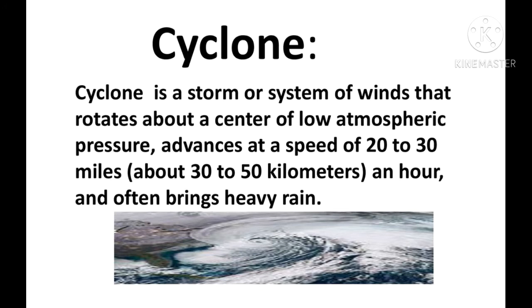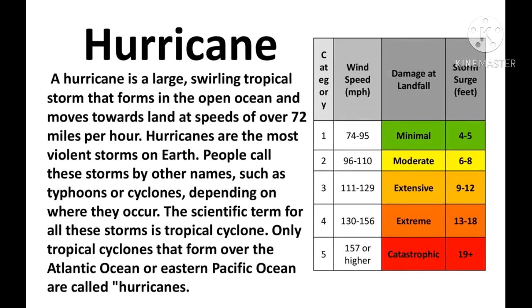A cyclone is a storm or system of winds that rotates about a center of low atmospheric pressure. It advances at a speed of 20 to 30 miles, about 30 to 50 kilometers per hour, and often brings heavy rain.